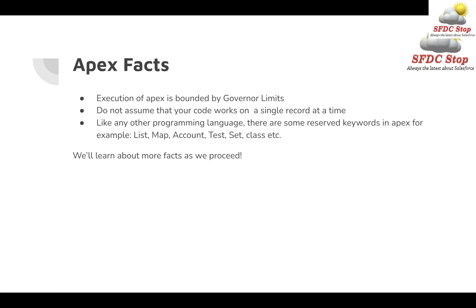We'll learn more about governor limits as we proceed. The next fact is: do not assume that your code works on a single record at a time. You might have heard about bulkifying your code. This basically means that, for example, if you wrote a trigger in Apex and the trigger says that as a lead record is inserted, I want the lead source to be populated — you cannot assume your code will run on only one record. It might be possible you are creating 10 records altogether, say using a data import wizard. So your code should be able to handle bulk records as well.